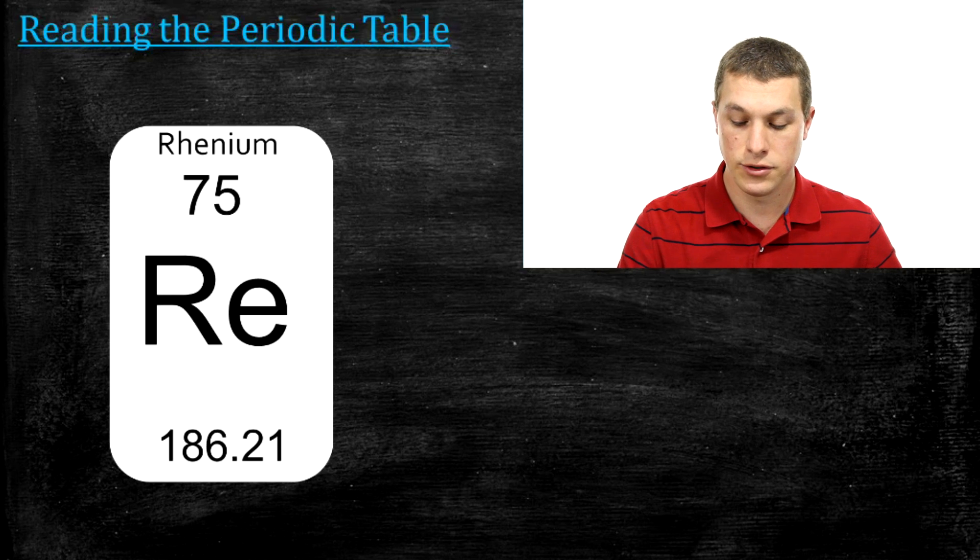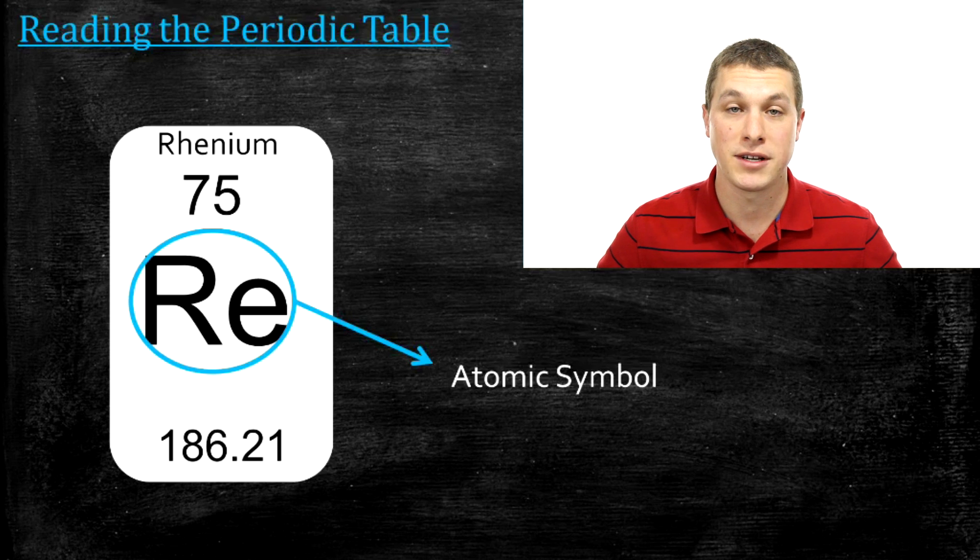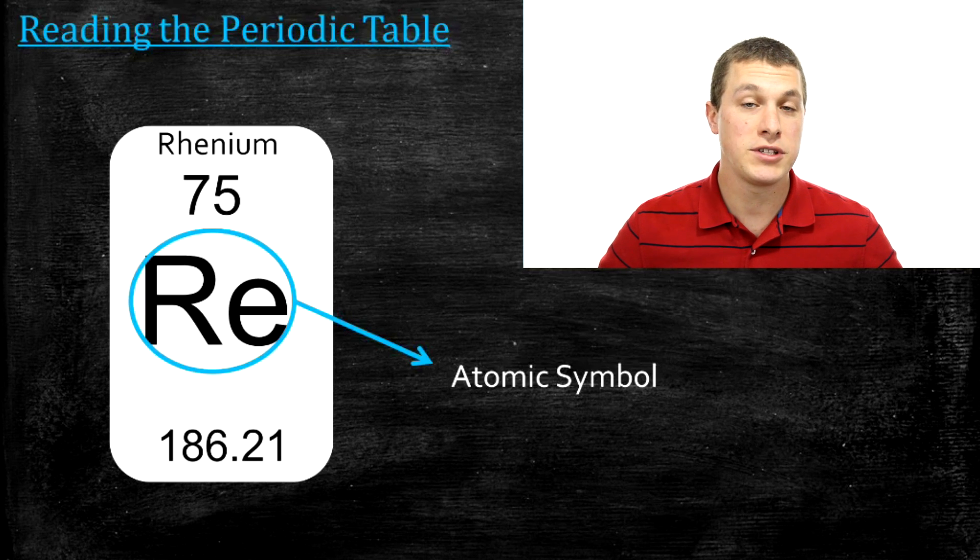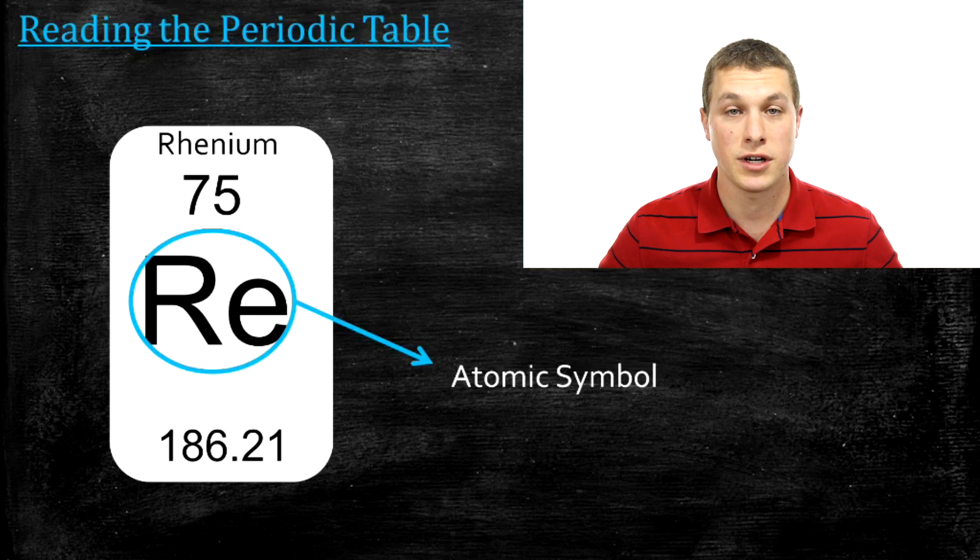It's element number 75, and you can see that 75 at the top of the box. In the middle of the box, you'll notice it says RE. This is just the atomic symbol. It's basically the abbreviation we use for that chemical. And it's particularly useful when we start to write chemical structures and other things like this to just have a shorthand for an element.